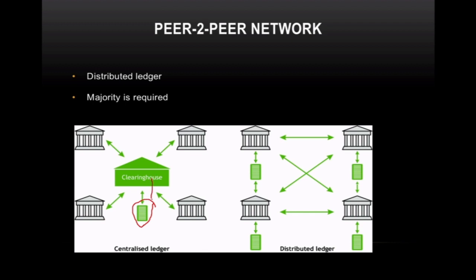If the central server cheats and changes something in the ledger, all nodes have to believe it. But in the distributed ledger, if a node wants to change anything, it will only change in its own copy of the ledger. Everyone first verifies whether the transaction is correct. Any new transaction gets reflected in every node's ledger only after it has been approved by the majority.